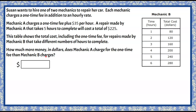Welcome back. So we are finding how much more Mechanic A charges for the one-time fee than Mechanic B. So we have Mechanic A and Mechanic B. Let's start with Mechanic A. Mechanic A is going to charge a one-time fee plus $35 per hour. The repair Mechanic A made was five hours to complete, so they did five hours at $35 per hour.